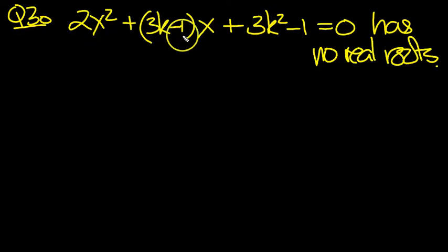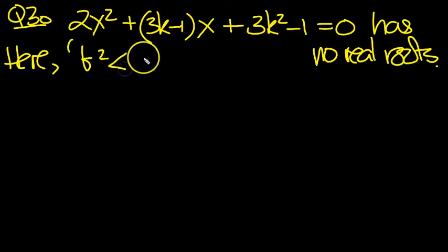2x² + (3k-1)x + 3k² - 1 = 0 has no real roots. So for this quadratic to have no real roots, we must have b² less than 4ac.